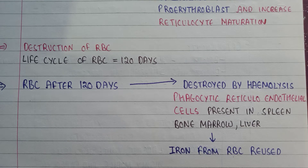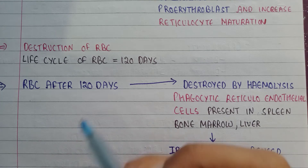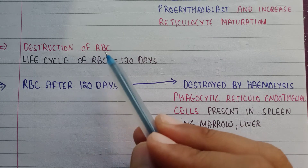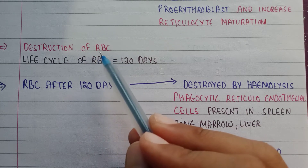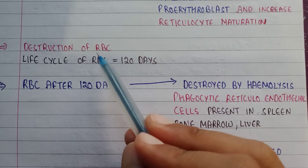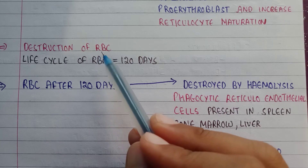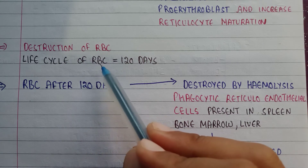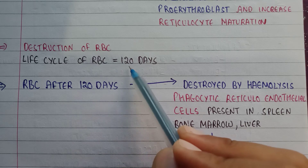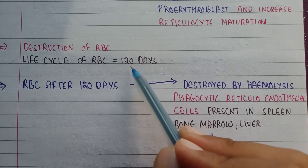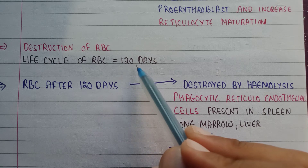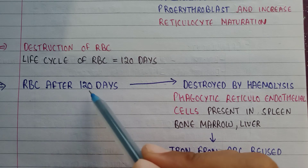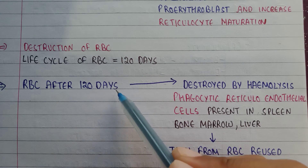In this video, we are going to learn about the destruction of red blood cells, or erythrocytes. The normal life cycle of an RBC is 120 days, after which it will be destroyed.